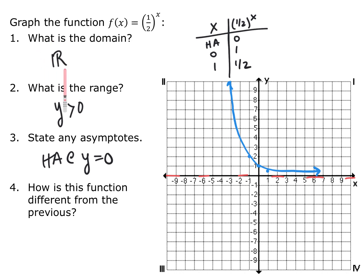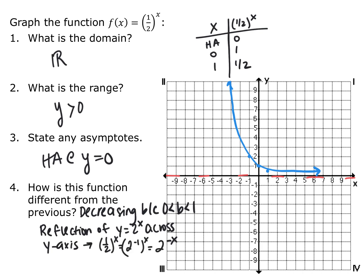Since there's no context, exponential functions always have a domain of all real numbers. The range is still y is greater than 0 since this hasn't been transformed, and there's still a horizontal asymptote at y equals 0. Looking at this graph, it's decreasing, whereas the previous function was increasing. That's because the base is between 0 and 1 — every multiplication by 1 half makes it smaller. This is also a reflection of the previous graph across the y-axis, because 1 half equals 2 to the negative 1, so raising it to the x power gives 2 to the negative x, and that negative x is a reflection across the y-axis.